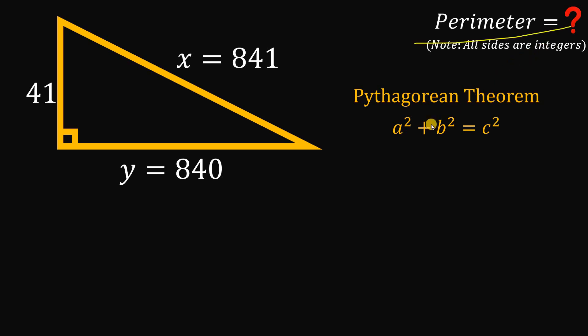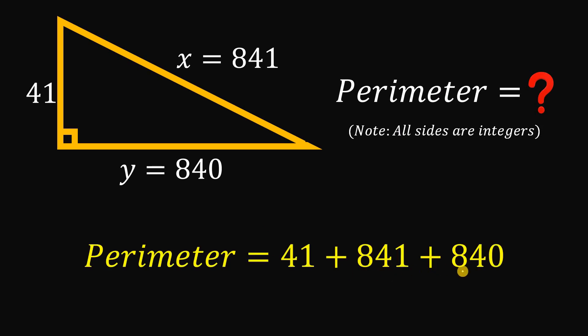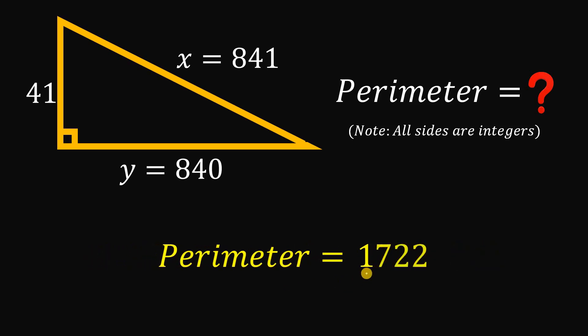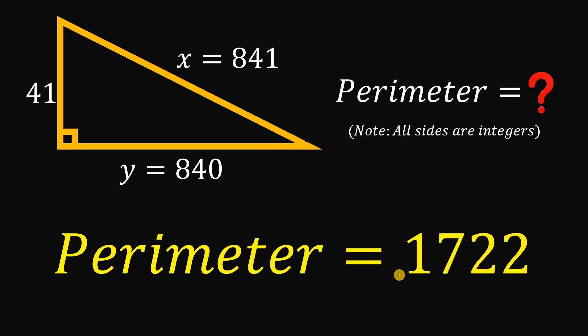We want the perimeter of this right triangle, so we need the sum of all sides. We have 41 plus 841 plus 840, and if we add those numbers we get the perimeter of this right triangle as 1722 units. That is the answer to this question, and as always we are done.